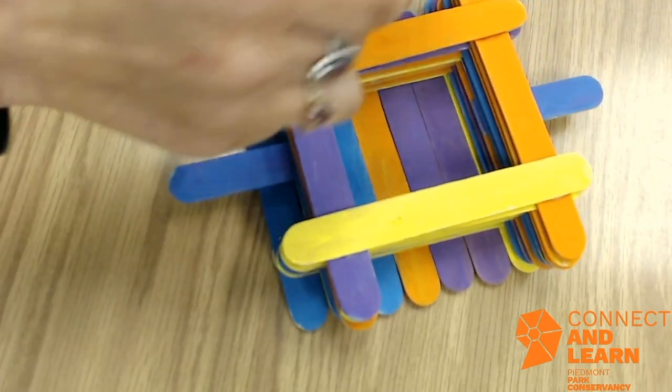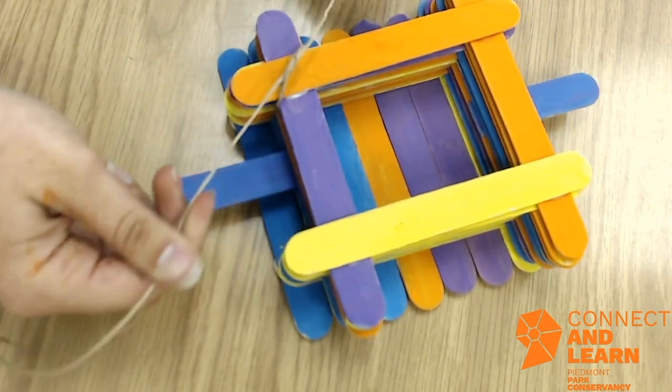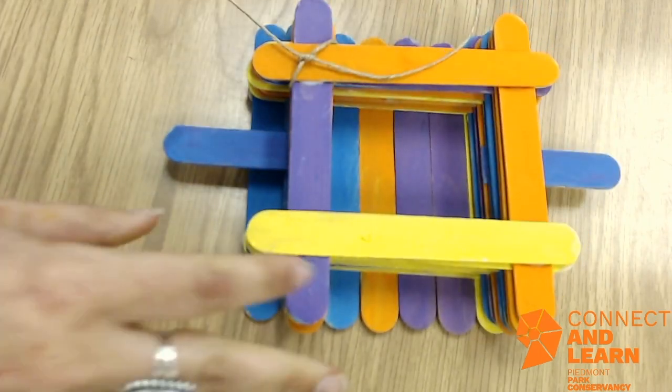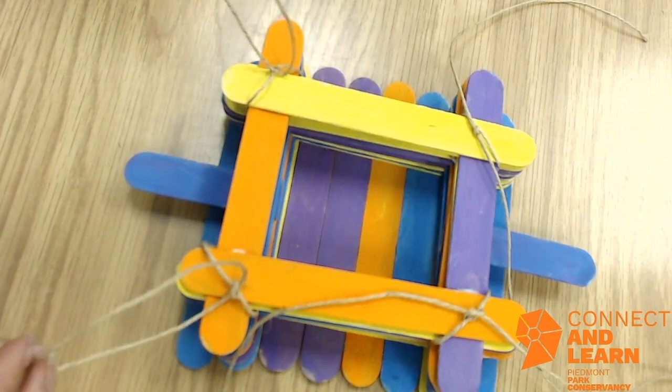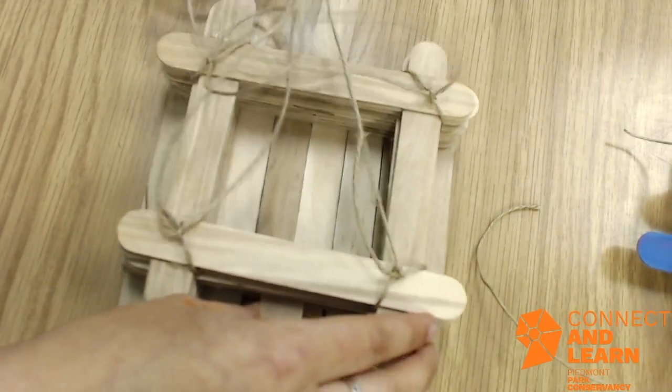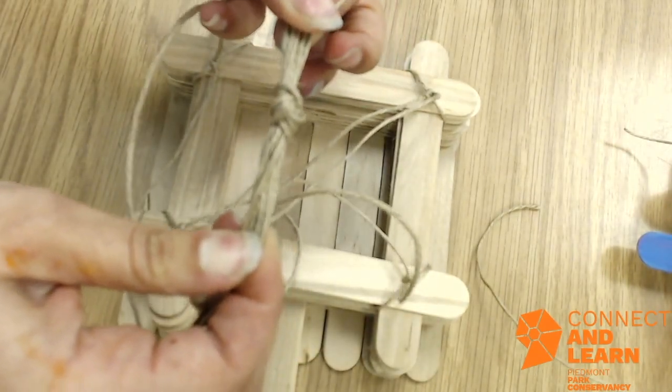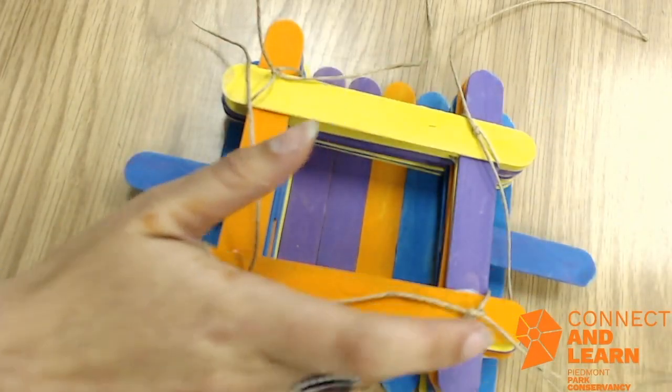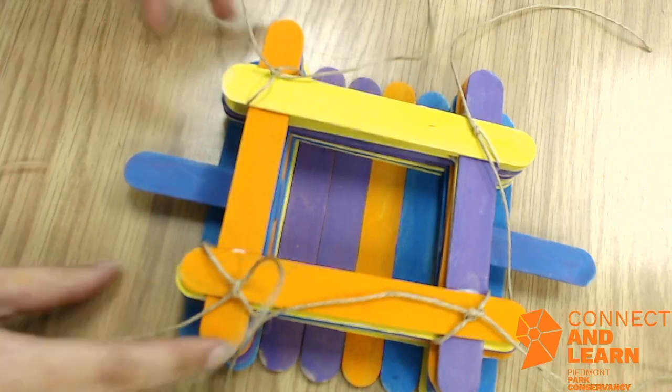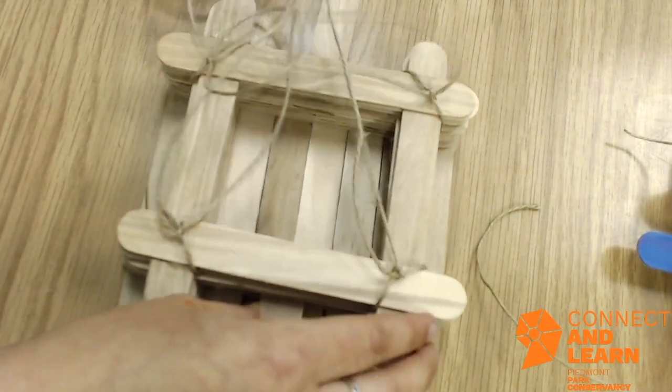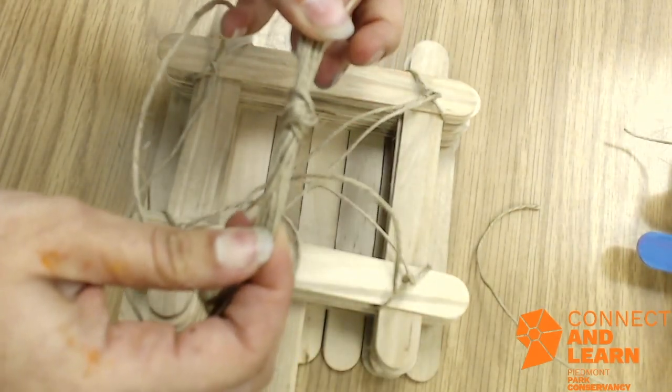After you've secured all four sides, you can use these to tie to a branch outside, or you can tie it at the top like this to hang from a hook or a smaller branch.